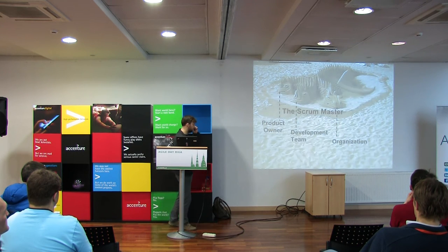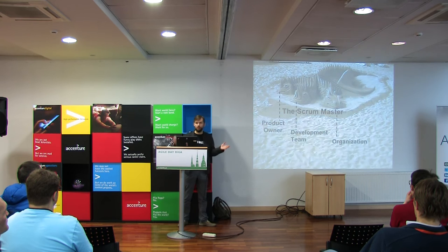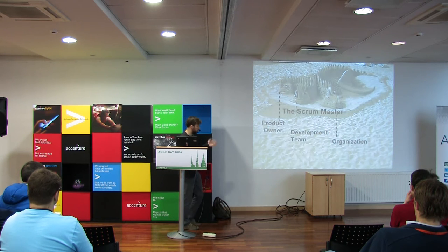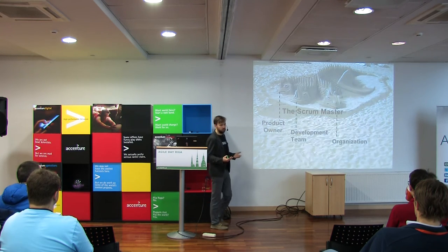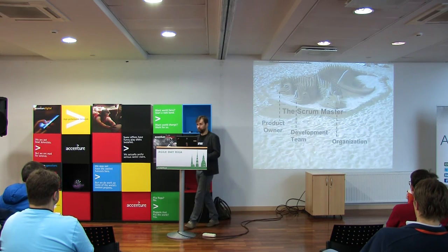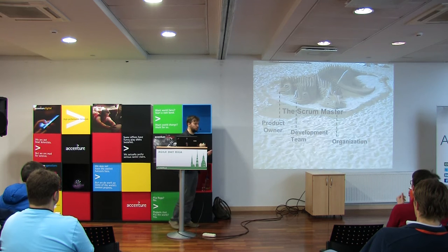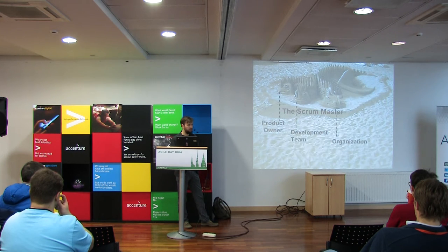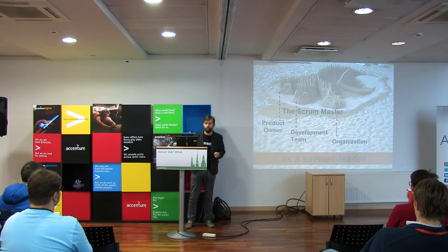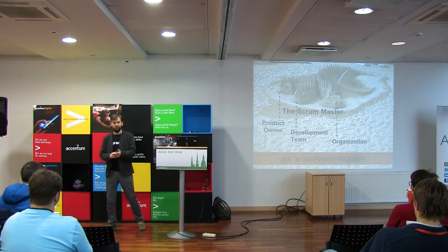The most widely known direction is the Development Team — the Scrum Master cares about the team, removes impediments and blockers, and facilitates team events. And of course there's the organization, because you can always improve and you can never be agile enough. Agility, at least in my understanding, is a property — are you agile or not? But the most interesting thing from the Scrum definition is just one sentence: Scrum Master acts as a servant leader. And who is that? We know managers, we know leaders — but who is a servant leader?